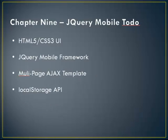Chapter nine gets into mobile development using the jQuery Mobile framework, which is pretty easy to use. We won't deploy it onto a smartphone — it'll just be an HTML5 browser app — but if you uploaded it to a website and visited on your phone, it would look really nice because of the mobile framework. It will be a multi-page Ajax template, and we'll also use the local storage API for a to-do list where you can create, edit, and delete to-dos.